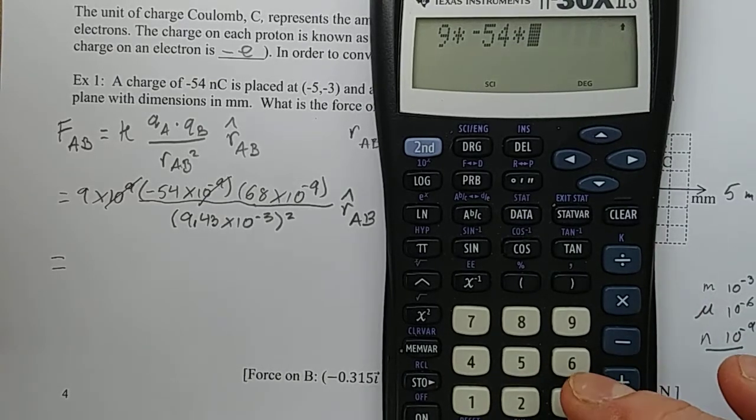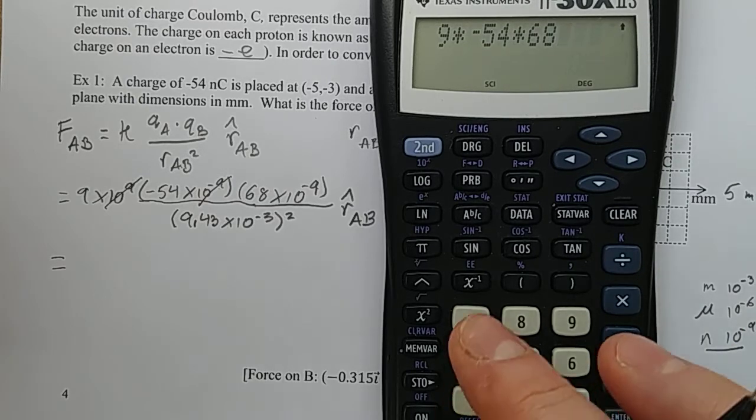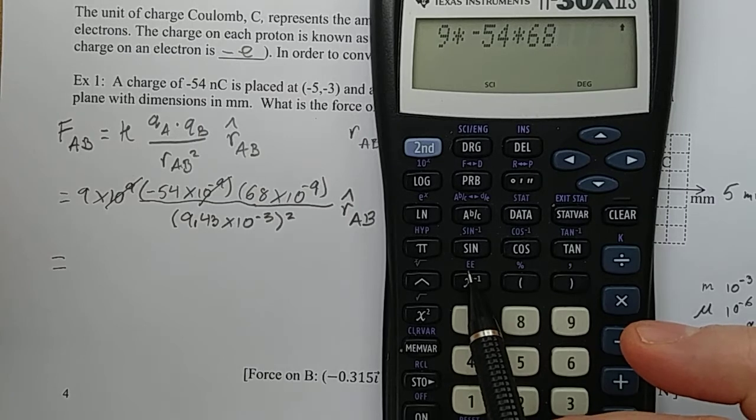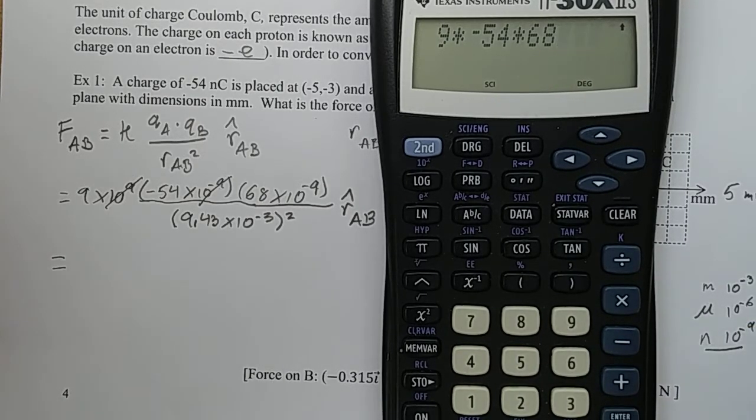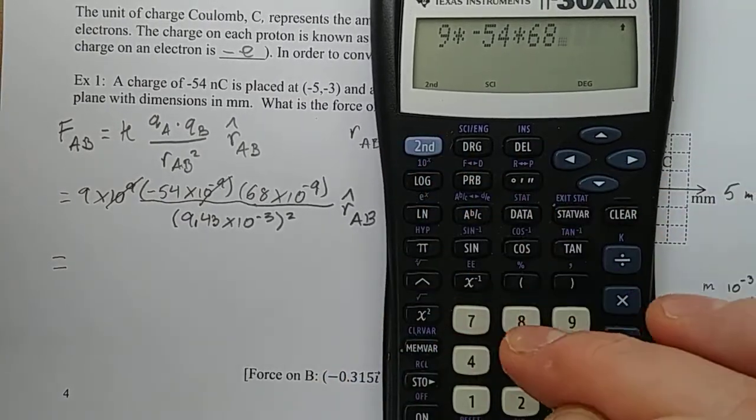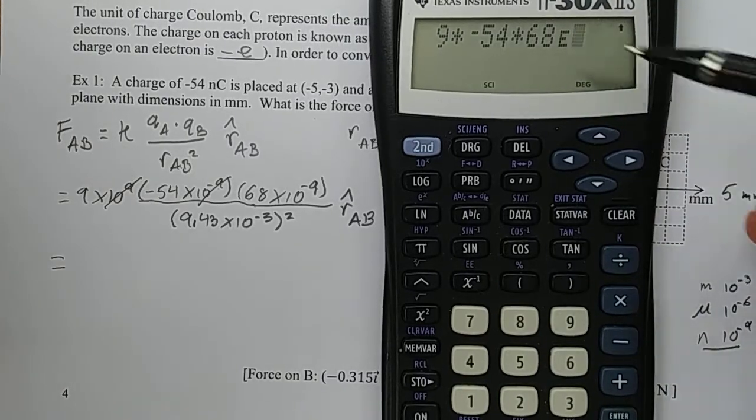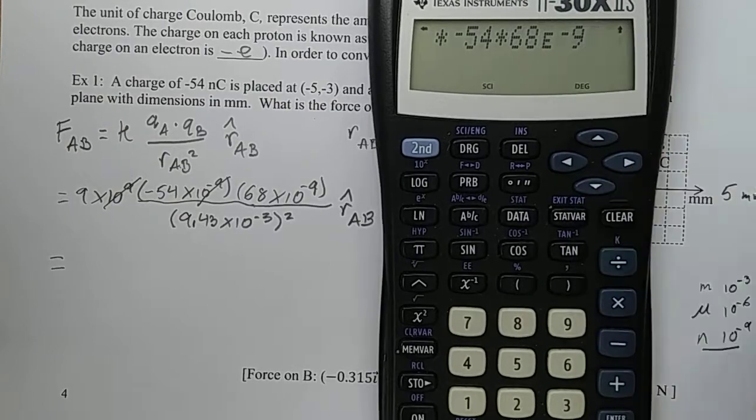The first thing I have is 9 times negative 54 times, and this part I want to make sure you're familiar with. 68 times 10 to the negative 9. The best way to enter that in your calculator is 68, and then instead of using times 10 to the something, you usually have some symbol. In my calculator here it's EE. On other calculators it's EXP for exponent. It means times 10 to the something. So I'm going to second EE. And notice that it says E there, and I'm going to put in negative 9. So that means times 10 to the negative 9.